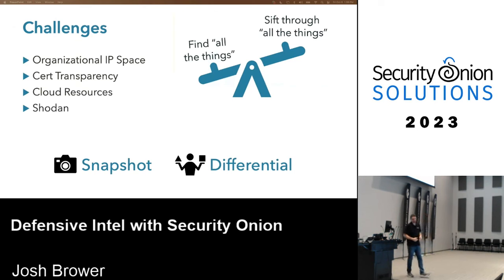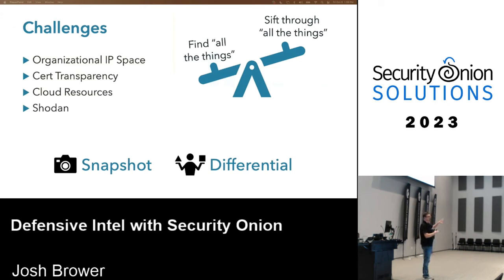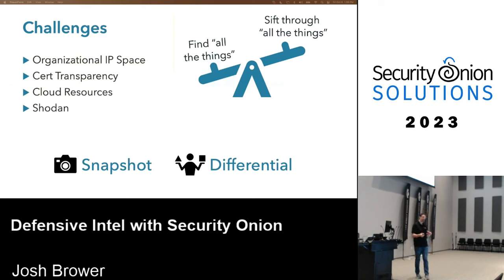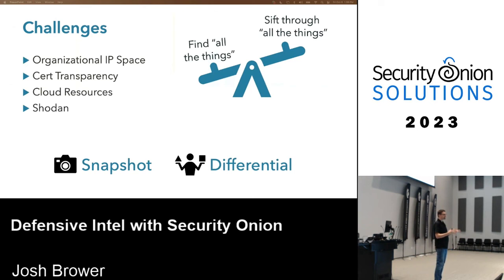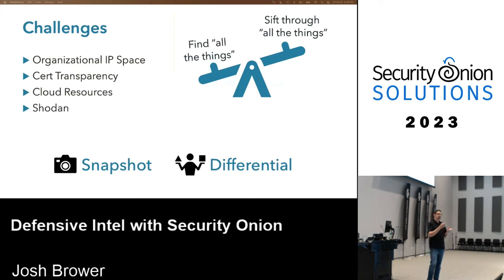There's a problem with differential though — you have to track state. You can't just go out to Shodan and get all current results; you have to know which results came in a month ago versus six months ago. Because differential is so important for long-term monitoring, I wrote these scripts with the mindset of saving state in a SQLite database — doing the nmap scan on a regular basis, saving state, and only ingesting changes into Security Onion.